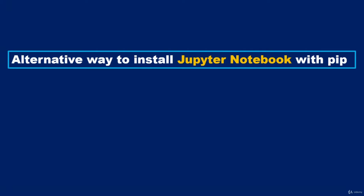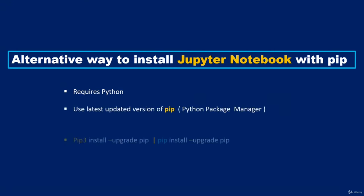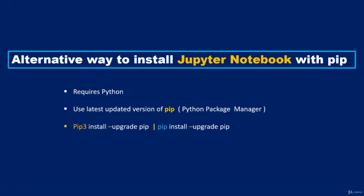Another way to set up the Jupyter Notebook is by using the Python package manager known as pip. This is recommended only for experienced Python users. Before you set up Jupyter using pip, you must make sure Python is already installed and that you have the most recent and updated version of pip. If you are using a Mac, Mac comes pre-installed with Python version 2.7, so you will need to type pip3 to refer to pip version 3. On a Mac, you type: pip3 install --upgrade pip. That will upgrade pip.